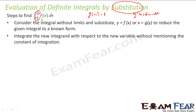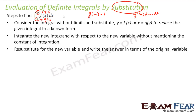Instead of x, it will be in the form of t. The limits become g(a) and g(b) kind of thing. That will change and then it will be a new integral altogether in f(t)dt form with new values — it is not a and b, it is different values. And then we will integrate.